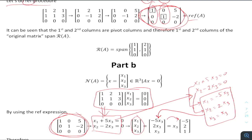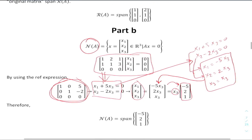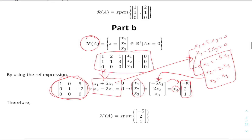With x3 as the free variable, we set x3 equal to a parameter. This gives us the null space vector [-5, 2, 1] scaled by x3. This single vector spans the null space.